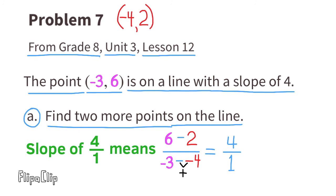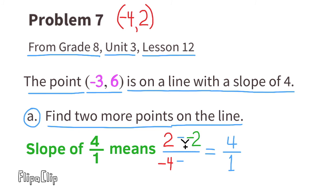Now find the second additional point. Using the new ordered pair negative 4 and 2: 2 minus what number equals 4? 2 minus negative 2 equals 4, so Y equals negative 2. Then negative 4 minus what equals 1? Negative 4 minus negative 5 equals 1, because minus a negative makes a positive. The second new ordered pair is negative 5 and negative 2.